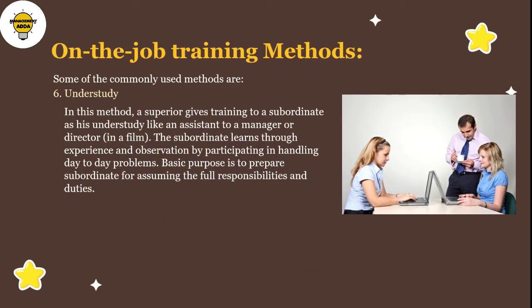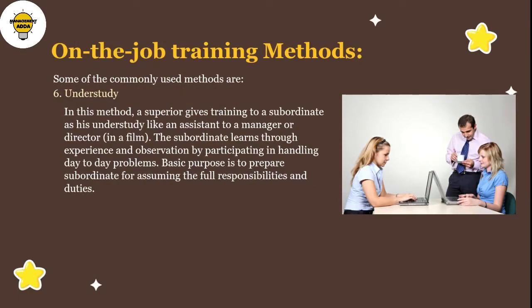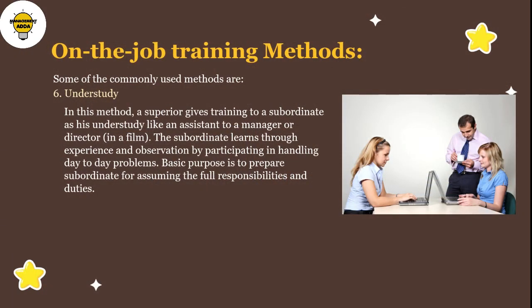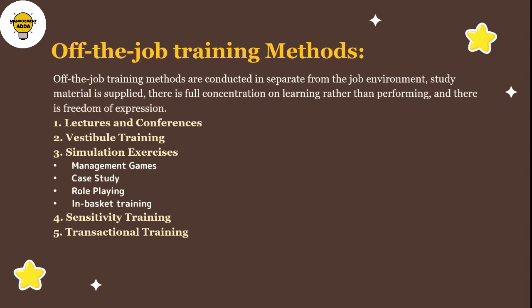In the understudy method, a superior gives training to a subordinate as their understudy, like an assistant to a manager or director. The subordinate learns through experience and observation, making their skills more efficient by watching and learning from what their superiors are doing. Under off-the-job training, we have lectures and conferences, vestibule training, simulation exercises, case study, management games, role playing, in-basket training, sensitivity training, and transactional analysis.